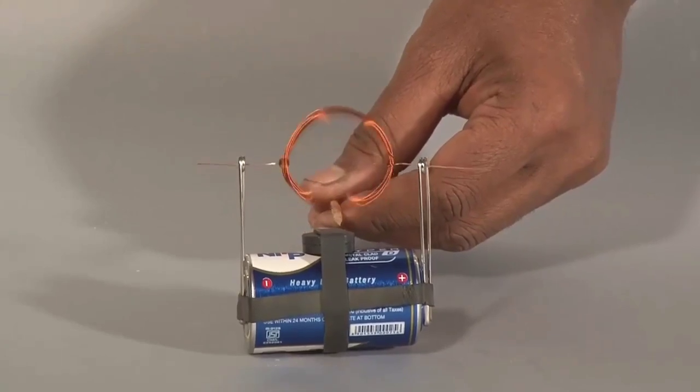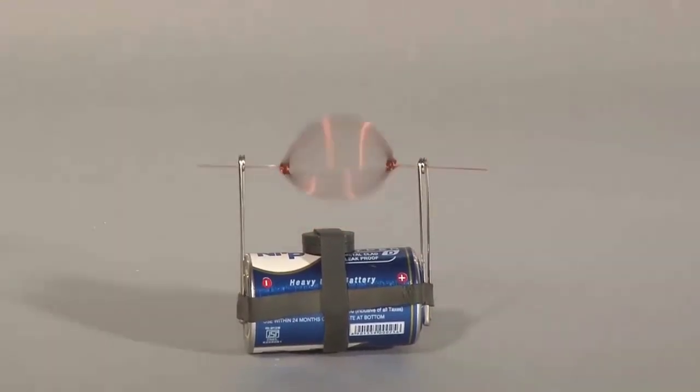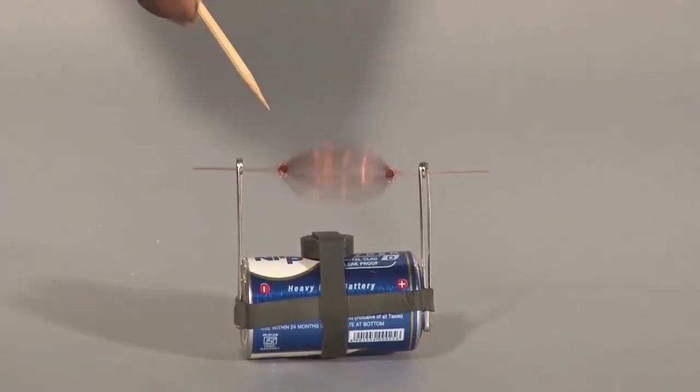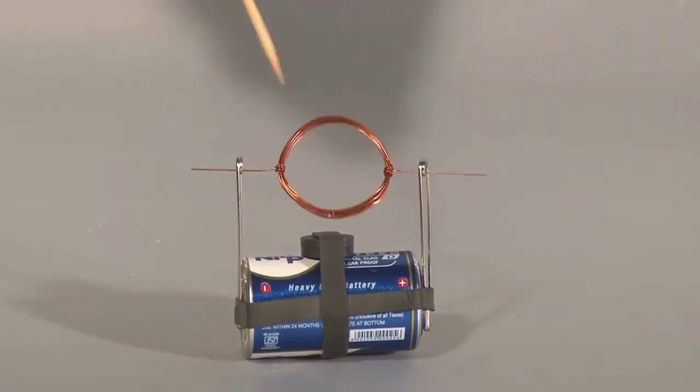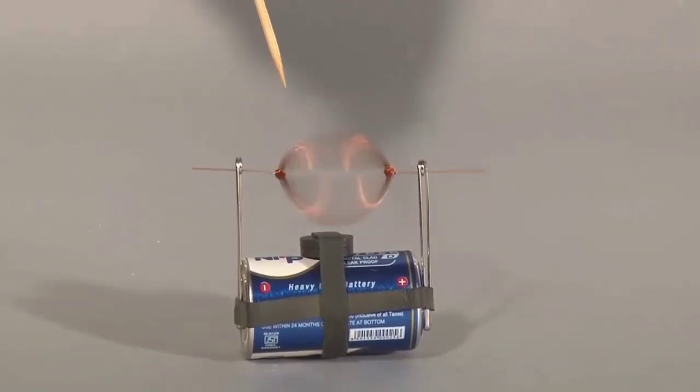The permanent magnet placed in the vicinity of the electromagnet gives it an attractive or repulsive kick depending on the polarity of both the magnets, and the coil rotates.